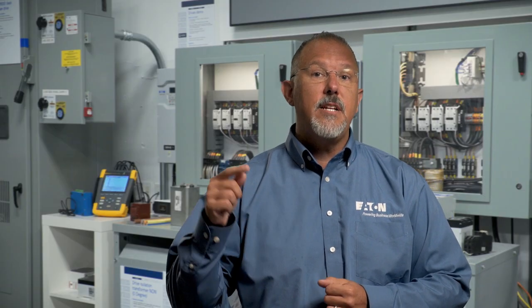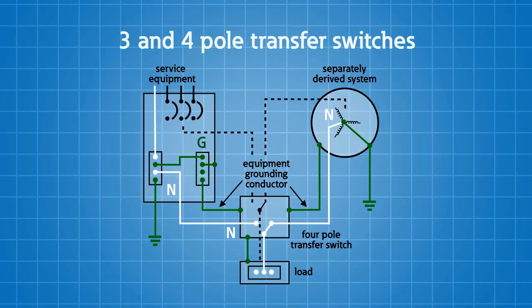A separately derived system implies that you would have a grounding electrode system and you would bond the neutral, the grounded conductor, in the generator with that system. If you have a separately derived system, the implication is that the transfer switch must switch the neutral with a four-pole transfer switch.